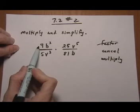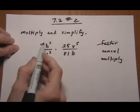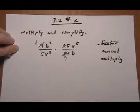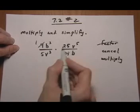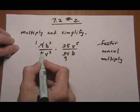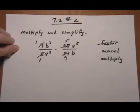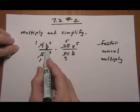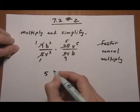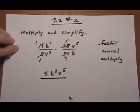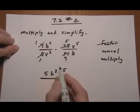So if you look at the 9, we could divide by 9 here and by 9 for the 81. That will leave us with a 1 and a 9. And then 5 and 25 both contain a 5, so divide off the 5, divide off the 5, and then we are left with 5 b cubed v to the fifth, so we do the multiply all over 9 b v cubed.